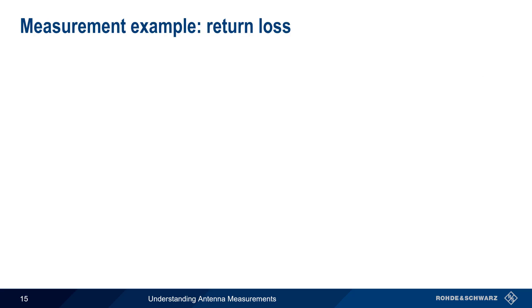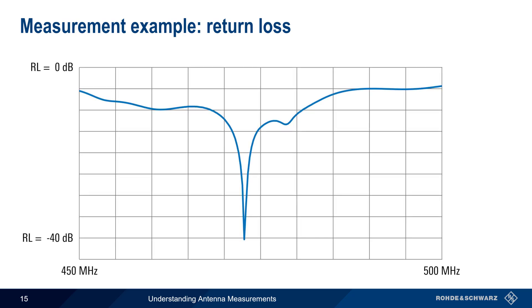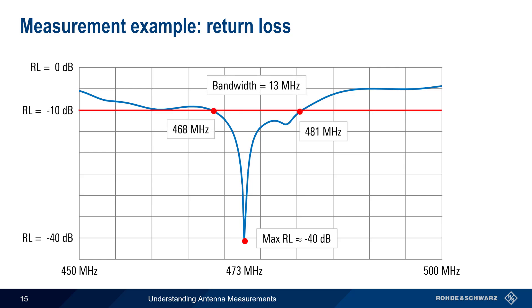Let's look at the same antenna again, but this time using return loss. Again, we see a minimum in the graph at 473 MHz, with a return loss of approximately 40, or minus 40 dB. And as before, we can specify the bandwidth of an antenna using return loss. Here, we're using minus 10 dB as the threshold, and once again we have a bandwidth of approximately 13 MHz, between 468 MHz and 481 MHz.